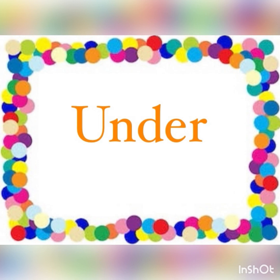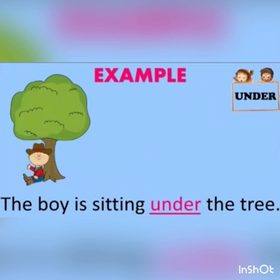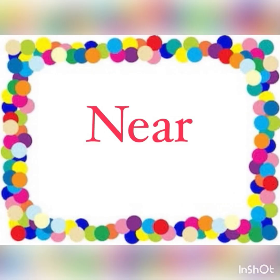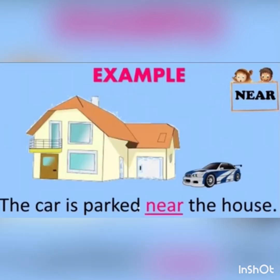Under means niche. Examples of 'under': The dog is sleeping under the table — dog kaha so raha hai? Table ke niche. So the position word is 'under'. The boy is sitting under the tree — boy kaha hai? Under the tree. So the position word is 'under'.